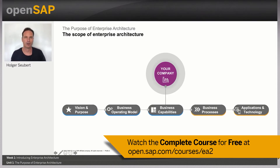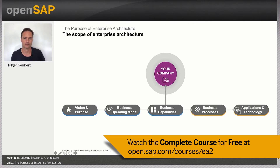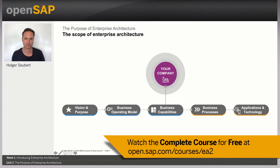Now how do you realize the vision? Every company has a business operating model defining required roles and responsibilities, and defining how those roles act together to deliver on the purpose.